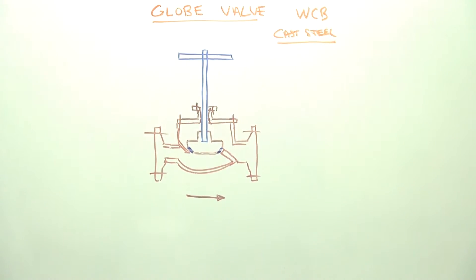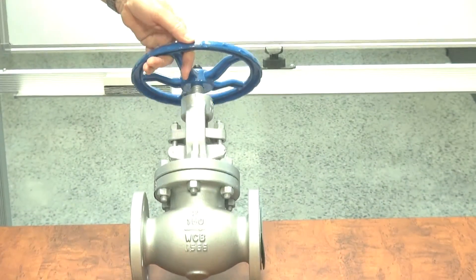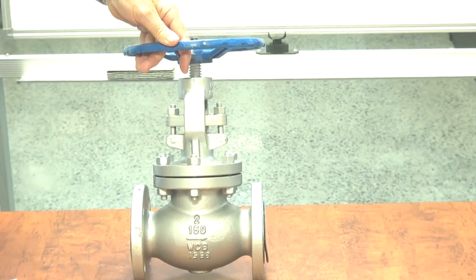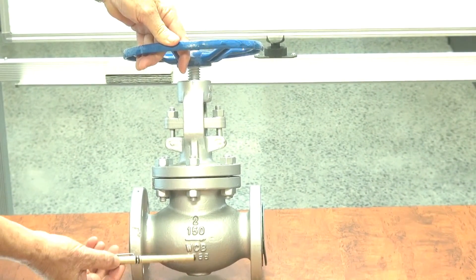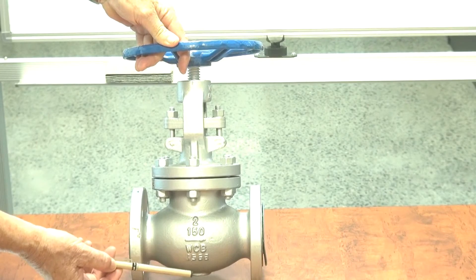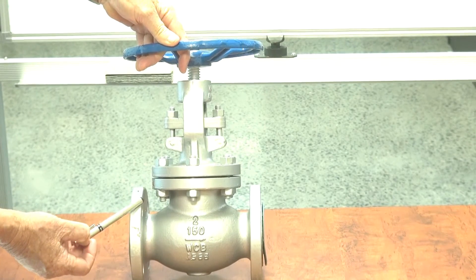I'll show you the unit down here. It's a 50 millimeter unit. Shows you the direction of flow here. 150 ANSI 150.